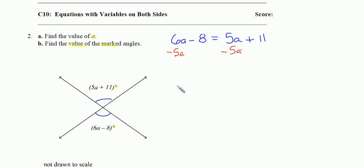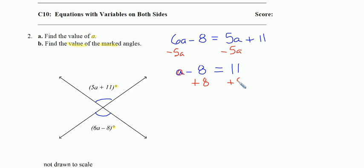The result is: 6a minus 5a is a, so a minus 8 equals 11. Let's add 8 to both sides — that's the inverse operation of the subtraction. The result is a equals 19. So we've done part a: a is 19.